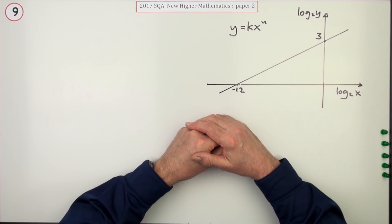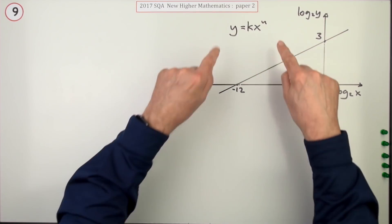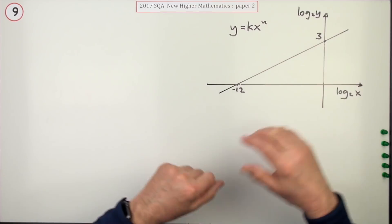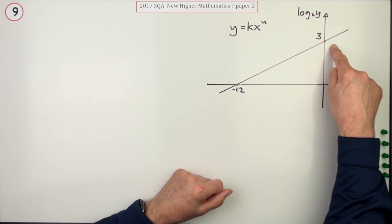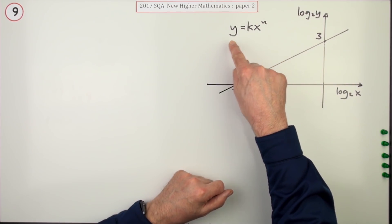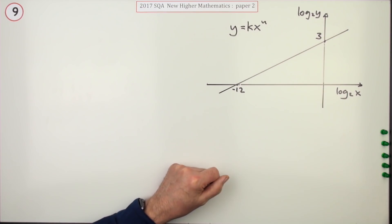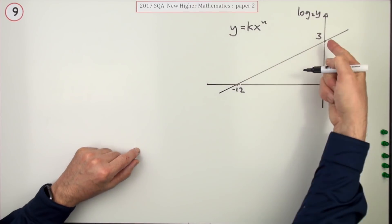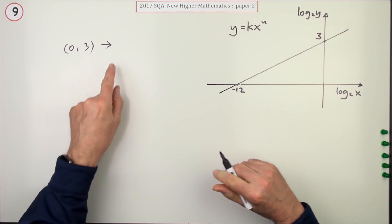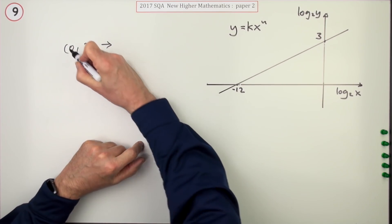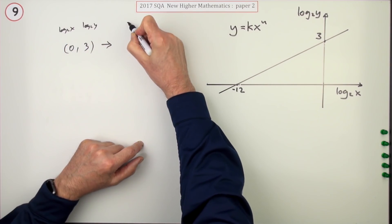Those would be the most common ways of doing it, either starting with the equation of the line and rearranging it back to the original one, or starting with the original one and applying logs to get the equation of the line. There is a third bit though, which is to take these two points and feed them back into the original equation and get two simultaneous equations, because notice there's two unknowns. You have to take the points, so this point here which is the point zero three, what would that translate back to in terms of XY?